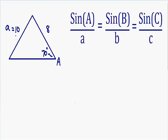The side with the length of 10 is side A. I'll say this angle down here is angle B, so the side opposite of B has to be side B — that's the side with the length of 8. And last but not least, the remaining angle is angle C, and the side opposite of C, which is the bottom side, is side C.